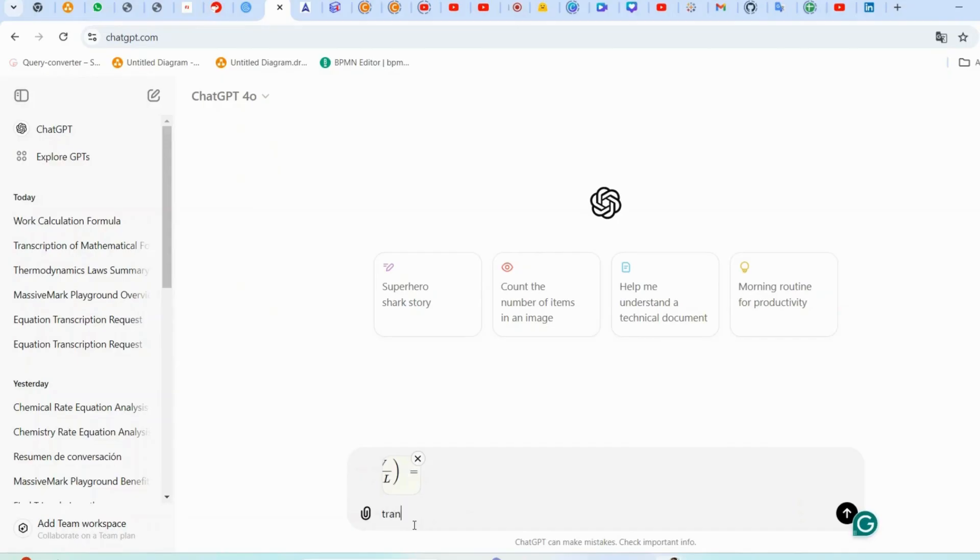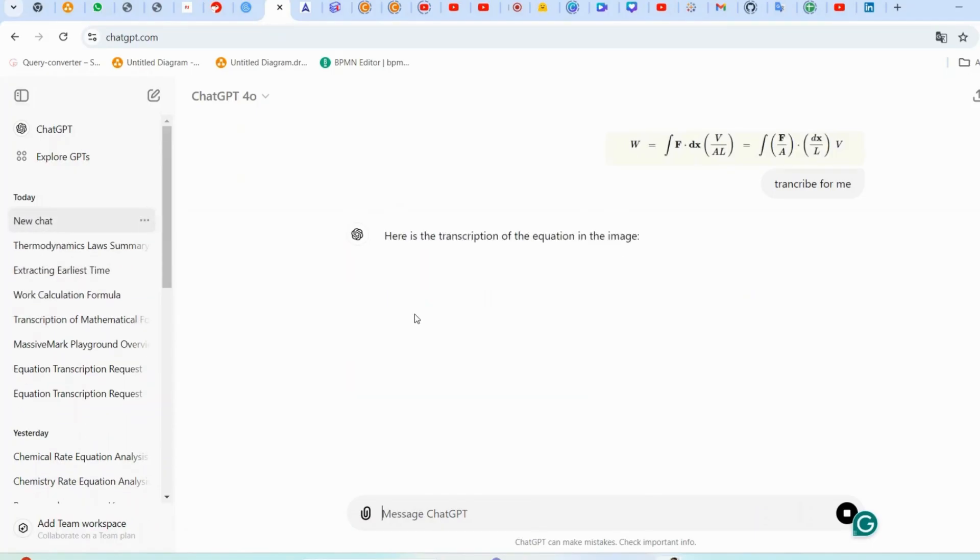Now that we have the equation in Markdown, I am going to show you an amazing tool called the MassiveMark Playground from where you can copy-paste any ChatGPT output into Docs in less than 3 seconds. Instead of manually copying your ChatGPT transcribed output into Word, which can break formatting, we can use the MassiveMark tool to preserve the structure and make sure everything is perfectly inline and editable.